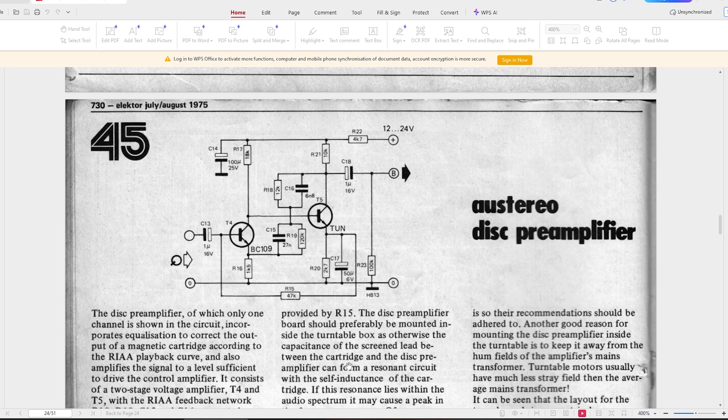Today we're going to be looking at another part of the Austereo series from the Elector July-August 1975 magazine. They call it a disc preamplifier. Basically, this is a phono preamplifier that corrects for the RIAA curve, which I'll explain in just a moment, and is suited mainly for moving coil and moving magnet cartridges.